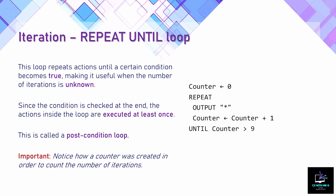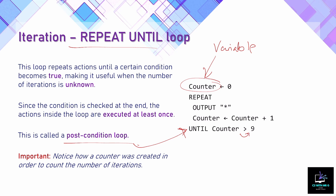The first condition controlled loop we're looking at is repeat until, which is a post condition loop — we're checking for the condition at the end. We're doing the same thing: outputting 10 stars, but using a repeat until loop. We need to create a counter variable, and at the end where it says UNTIL, we check whether that counter has reached a value greater than 9, which is when this loop will stop.